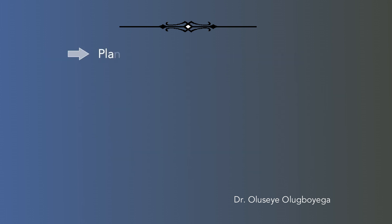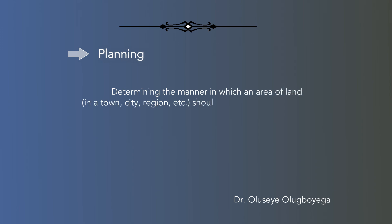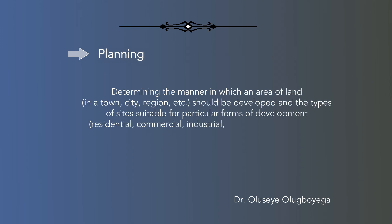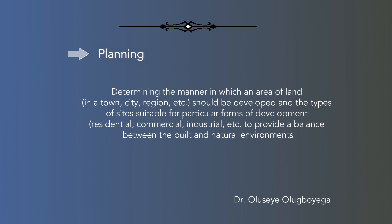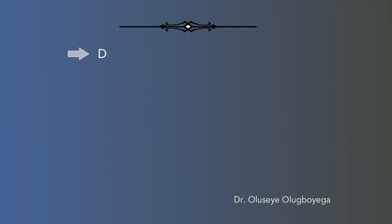Planning: determining the manner in which an area of land — inner town, city, region, etc. — should be developed, and the types of sites suitable for particular forms of development such as residential, commercial, industrial, etc., to provide a balance between the built and natural environments.